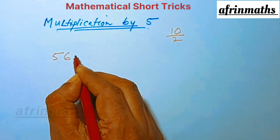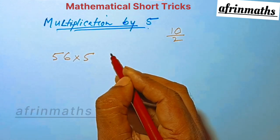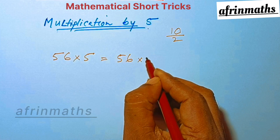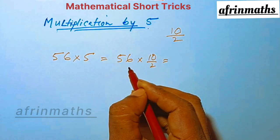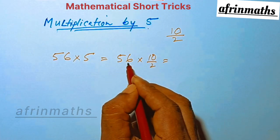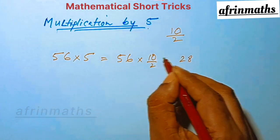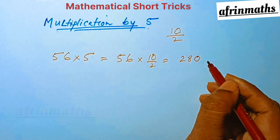56 multiplied by 5. What we have is 56 into 10 by 2, which is half of 56 is 28, and we have a 0 here, so it is 280.